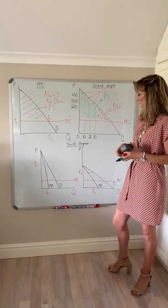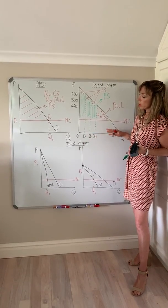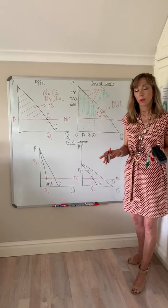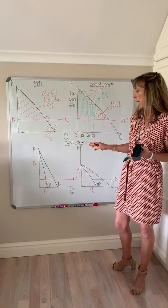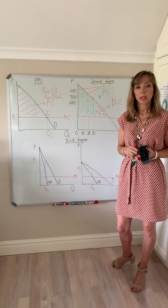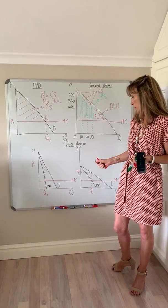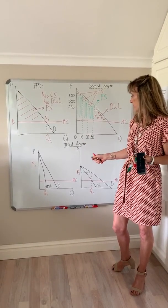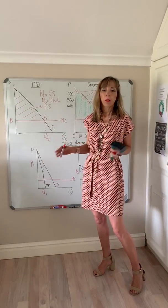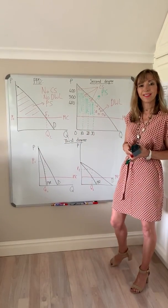If you want to compare third degree price discrimination in terms of welfare to a single-price monopolist, you'd have to consider the particular circumstances, because the deadweight loss might be more or less depending on how much is actually produced in total. I hope that helps you.